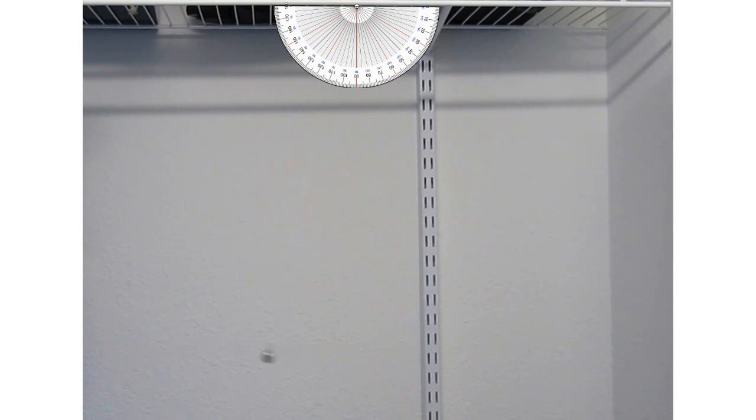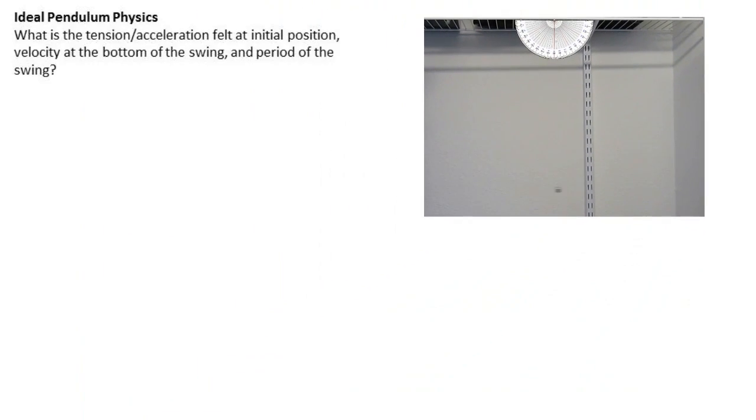I hung a fishing weight in my closet and let it swing back and forth. In this video, we will be finding the tension and acceleration at its initial position, velocity at the bottom of the swing, and the period of the swing of the fishing weight.